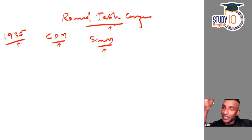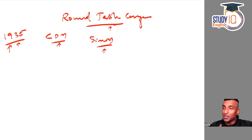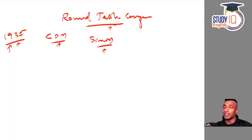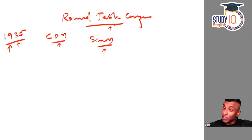All these events are connected. You get a question on the Nehru Report, you have to talk about this. Simon Commission — you have to talk about this. Civil disobedience movement — you have to discuss about this. 1935 Government of India Act — you still need to talk about this. So be it any question, you will never face a problem with content. Even if you know only a little about 1935, come to the roundtable conference and manage it from there. These are a chain of events and all are connected.